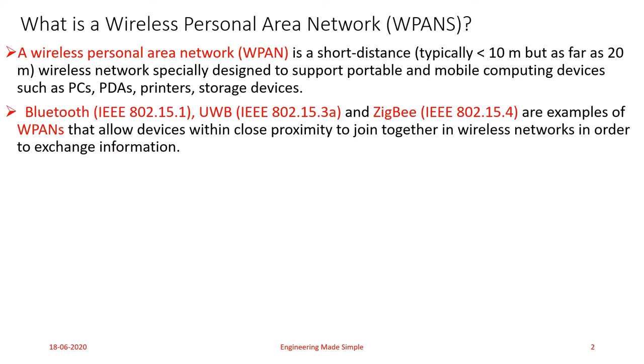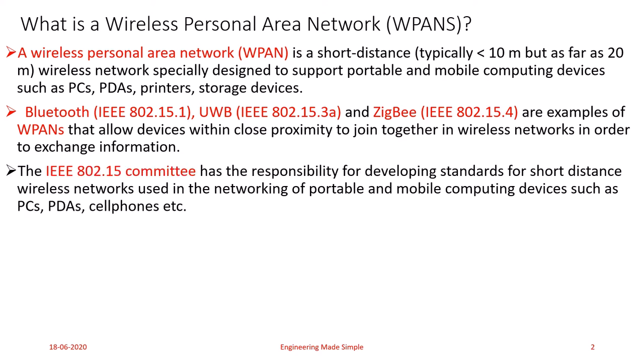Bluetooth (IEEE 802.15.1), UWB (IEEE 802.15.3A), and ZIGBEE (IEEE 802.15.4) are examples of Wireless Personal Area Network technologies that allow devices within close proximity to join together in a wireless network in order to exchange information. The IEEE 802.15.1 committee is responsible for developing standards for various wireless networks.